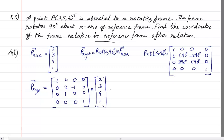It might look a little difficult because you are multiplying a 4x4 matrix, but most values are zero. Multiplying 2 by 1 and the rest with 0, the result is: x = 2, y = -4, z = 3, with a scaling factor of 1. So the coordinates of the frame relative to the reference frame after rotation are (2, -4, 3).